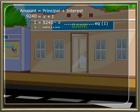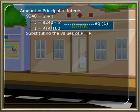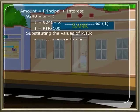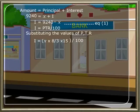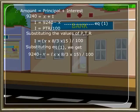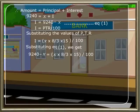We also know that I equals PTR by hundred. Substituting the values of P, T, and R, we get I equals x into eight by three into fifteen, whole by hundred. Substituting equation one, we get 9240 minus x equals x into eight by three into fifteen, whole by hundred.